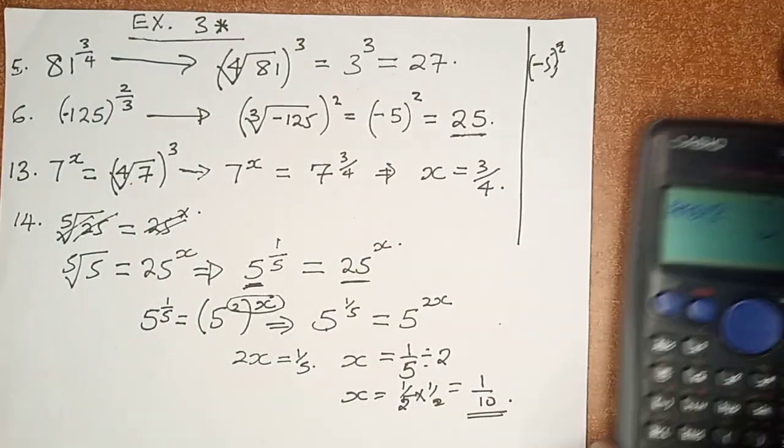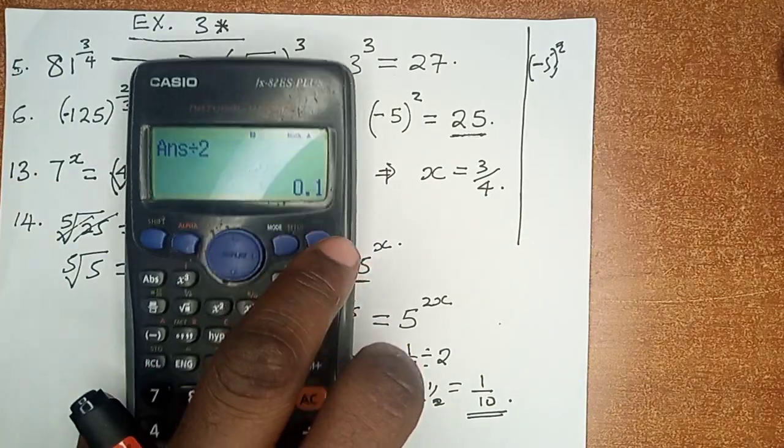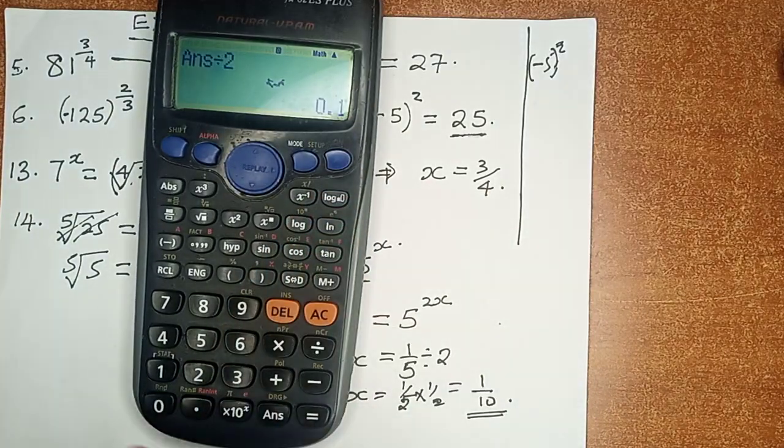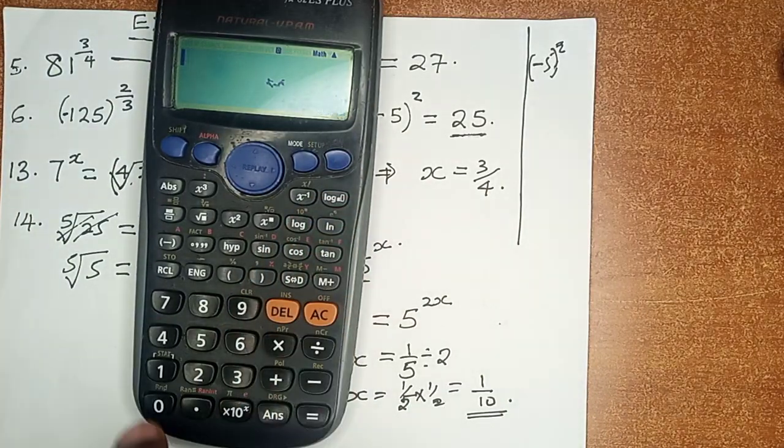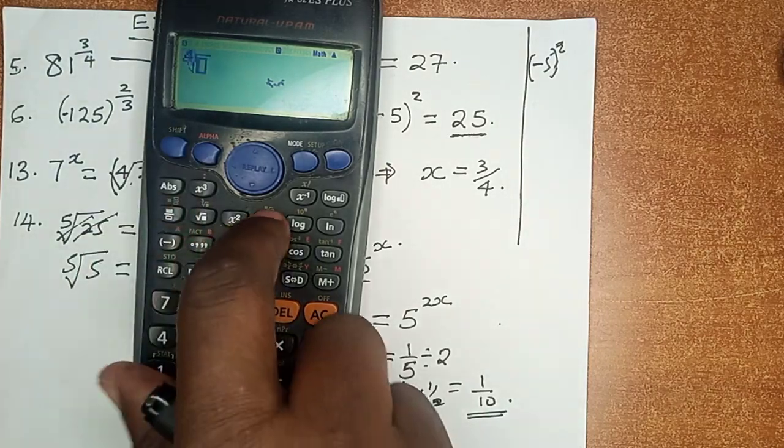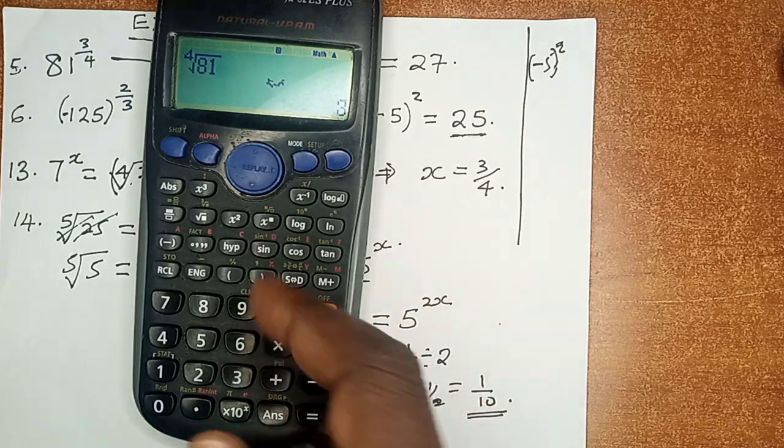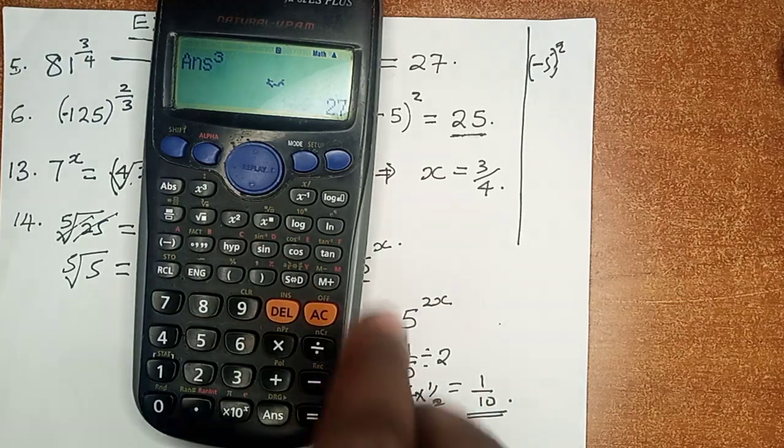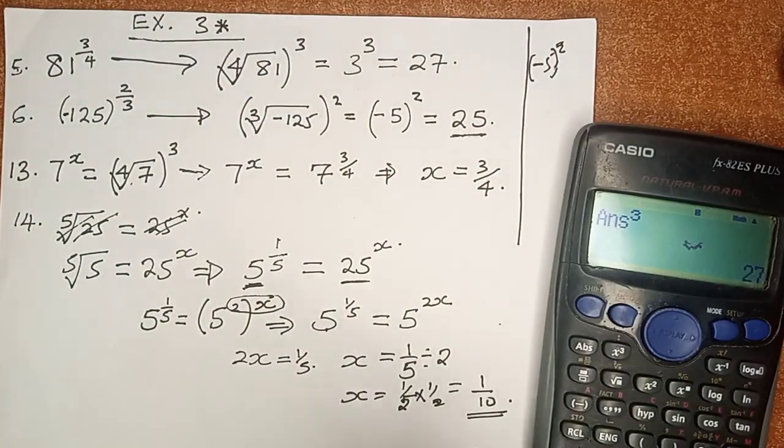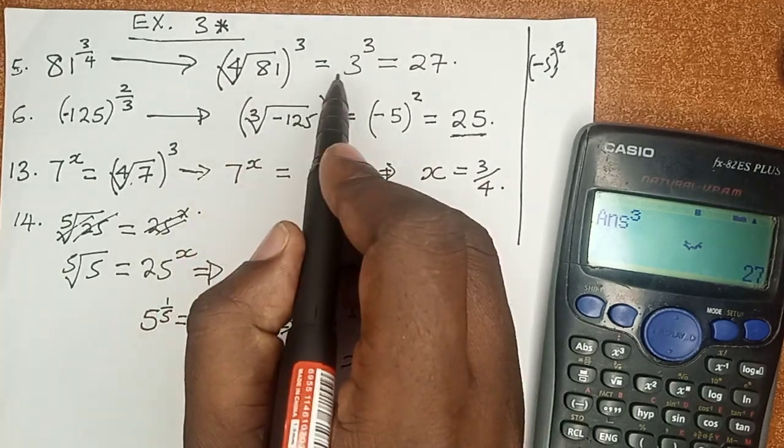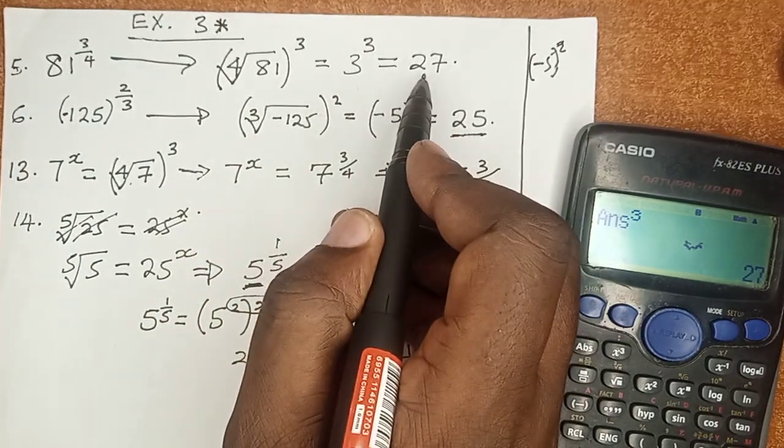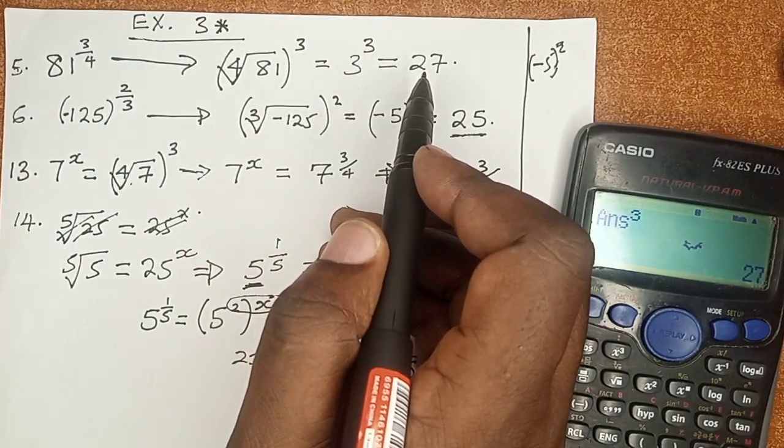Now, let us go for the fourth root of 81. What is the fourth root of 81? That is easily a 3. 3 cubed is what gives us, now that the fourth root of 81 is 3, 3 cubed is 27. And that is number 5.